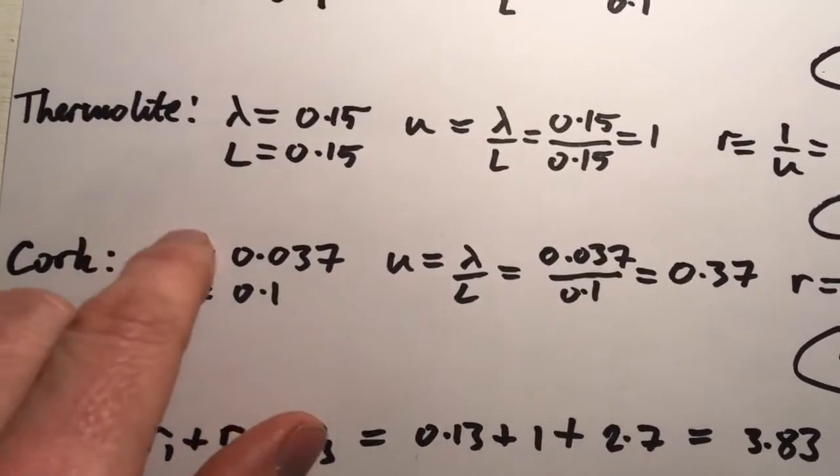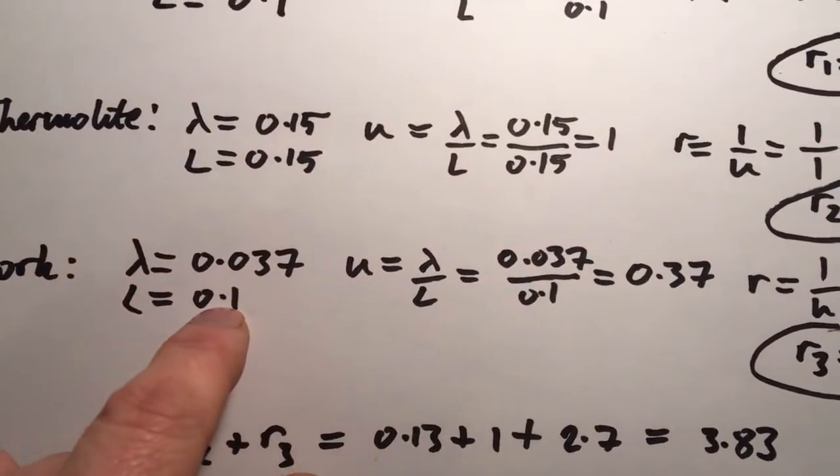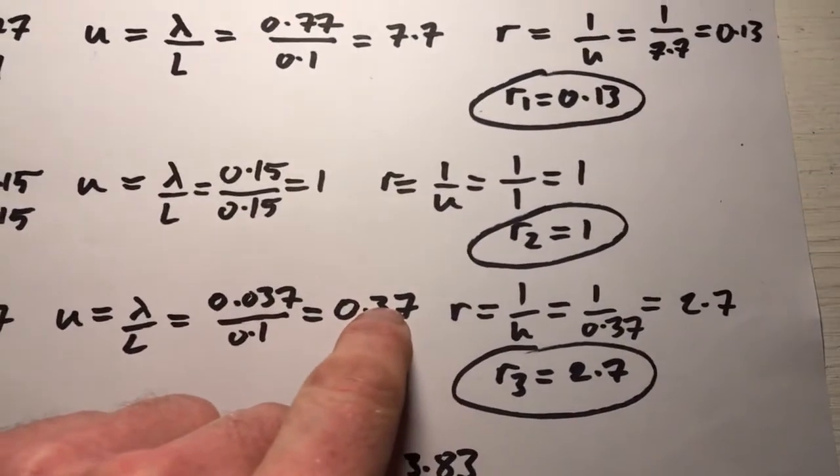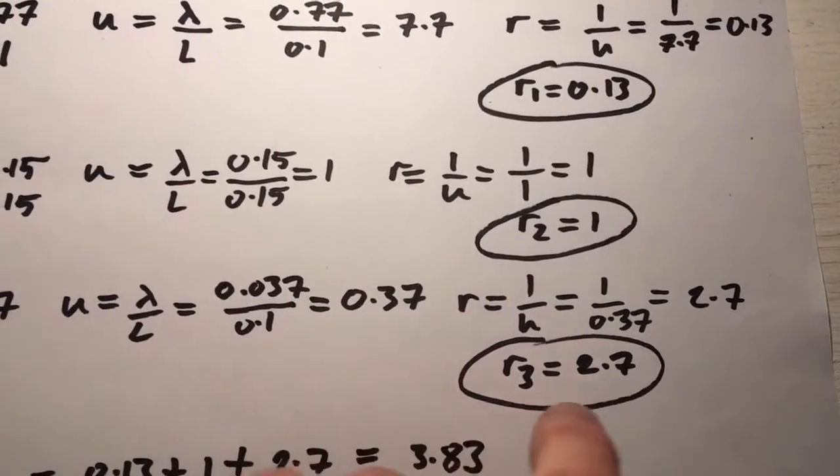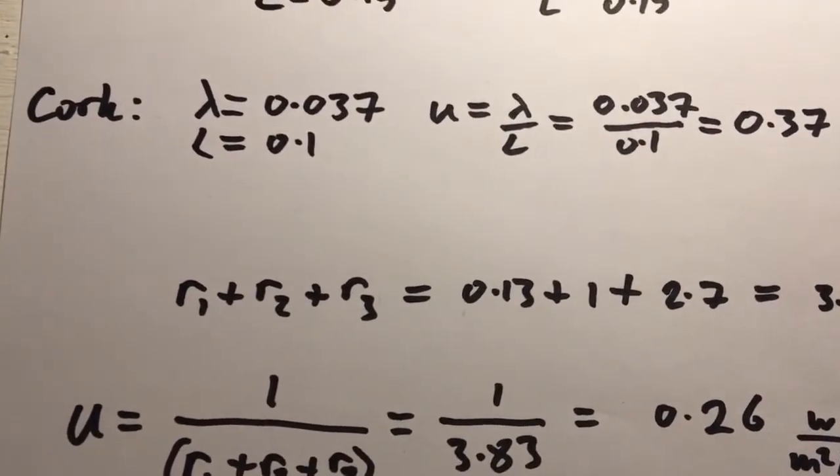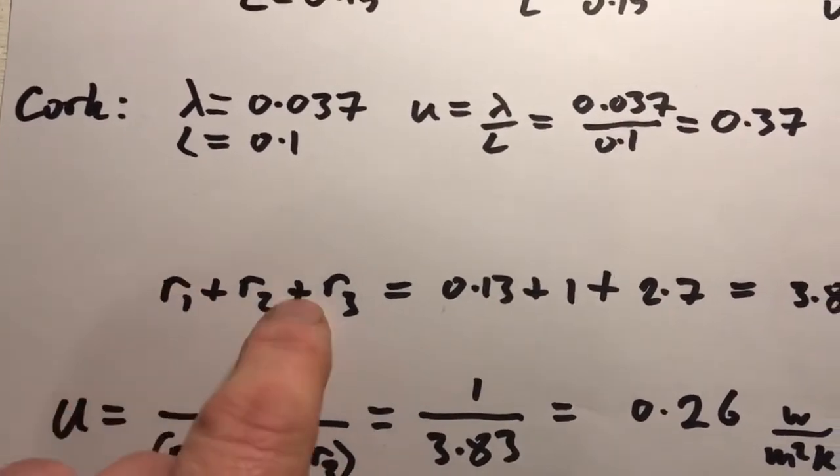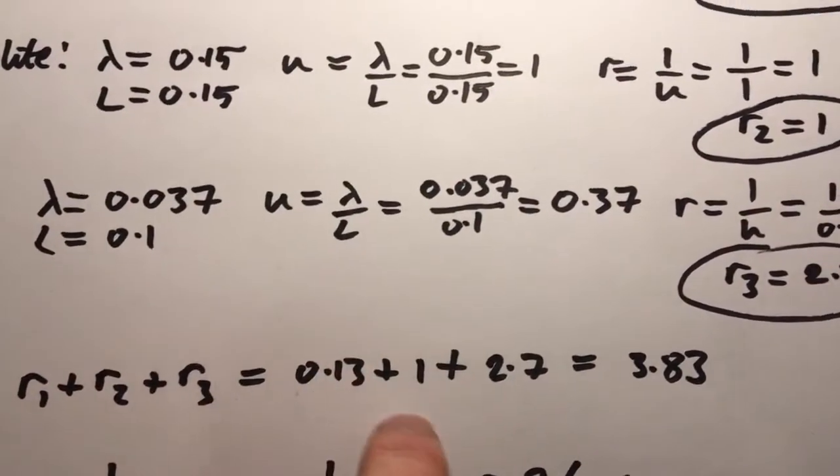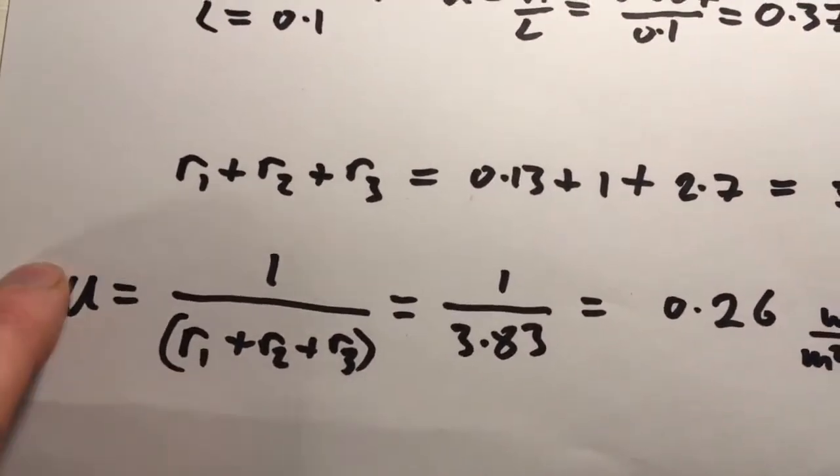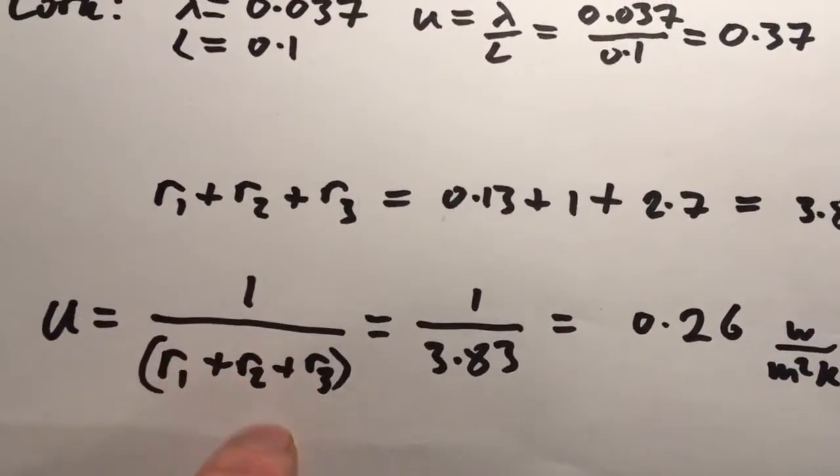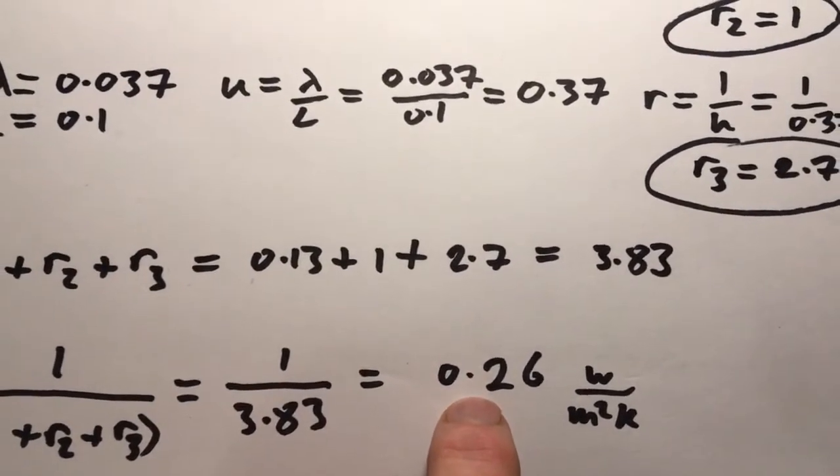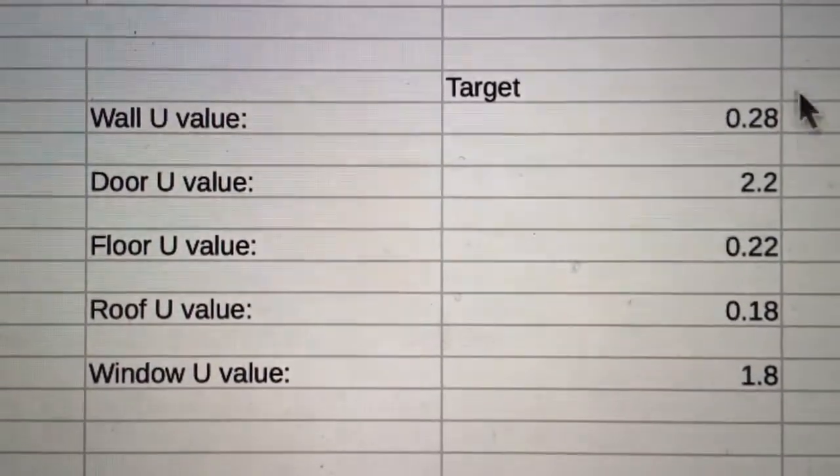And for the cork, lambda equals 0.037, and L equals 0.1. So we have a U of 0.37, and R of 2.7, so R3 is 2.7. Now, to find the overall U-value of a wall made up of those three, add together R1, R2, and R3. That's 0.13, 1, and 2.7, to give 3.38. And then we take the inverse of that, U equals 1 over R1 plus R2 plus R3. 1 over 3.83, which is 0.26 watts per meter squared kelvin. Which, once again, beats the target of 0.28, so it's all good.